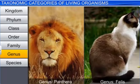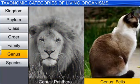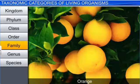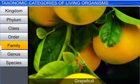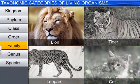However, the genus Panthera differs slightly from another genus, Felis, which includes cats. The next rank or category is family, which consists of a group of related genera with fewer similarities as compared to genus and species. For example, orange, lemon, and grapefruit belong to the family Rutaceae, or the citrus family. Likewise, the lion, the tiger, the leopard, and the cat fall into the family Felidae.